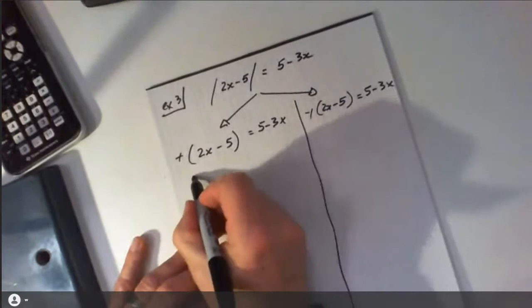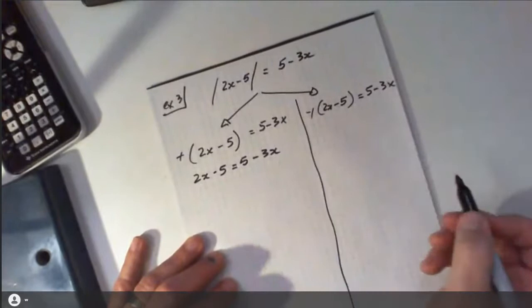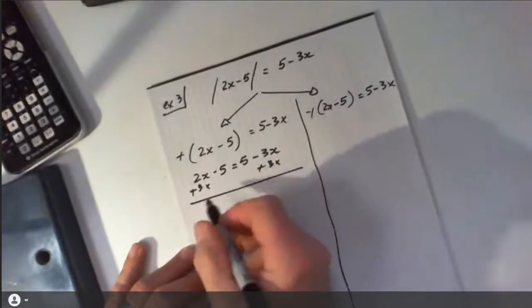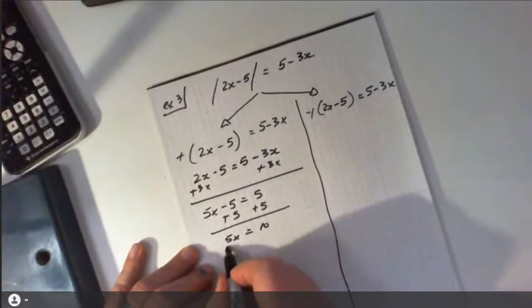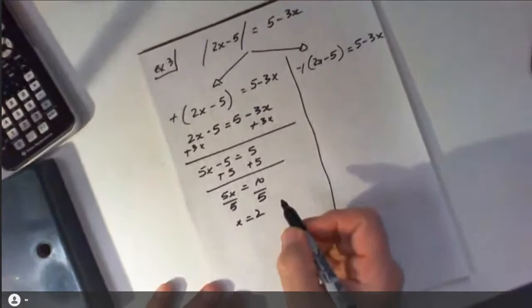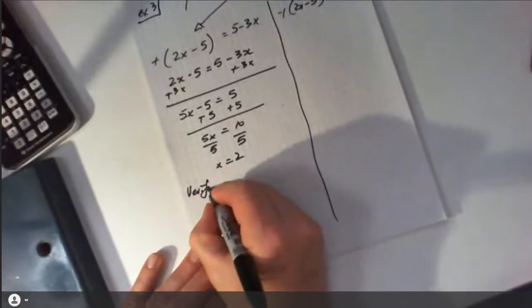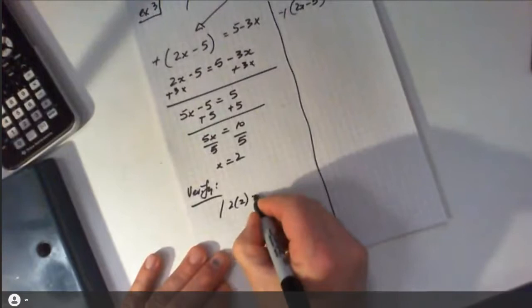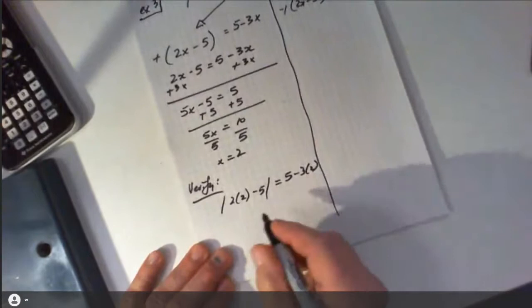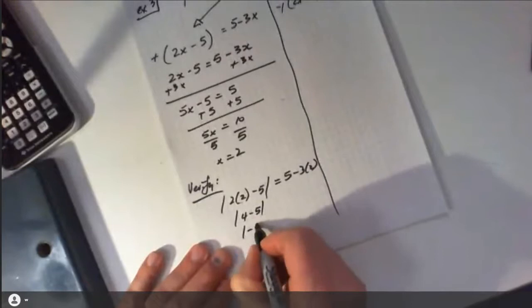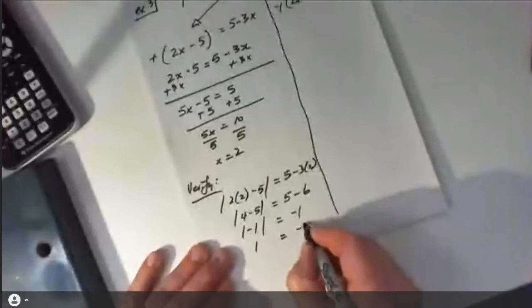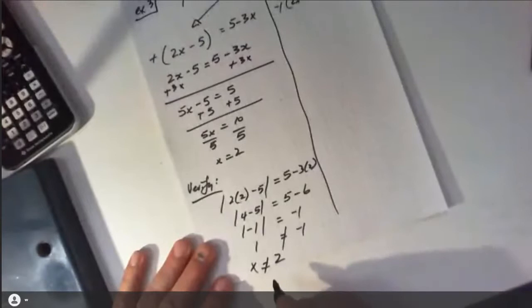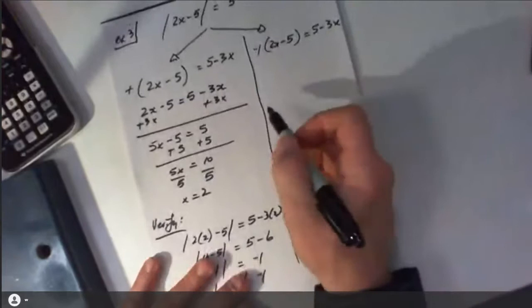Distributing — nothing changes on the positive side. So all I'm going to do is add 3x and solve this like a linear equation. That gives me 5x minus 5 equals 5. Adding 5 gives me 5x equals 10, and dividing by 5 gives an answer of x equals 2. Replacing it in the original equation: the absolute value of 4 minus 5 is the absolute value of negative 1, which is 1. On the right side, 5 minus 6 is negative 1. These are not equal, so x equals 2 is not a solution. This is why it's important that you must verify.